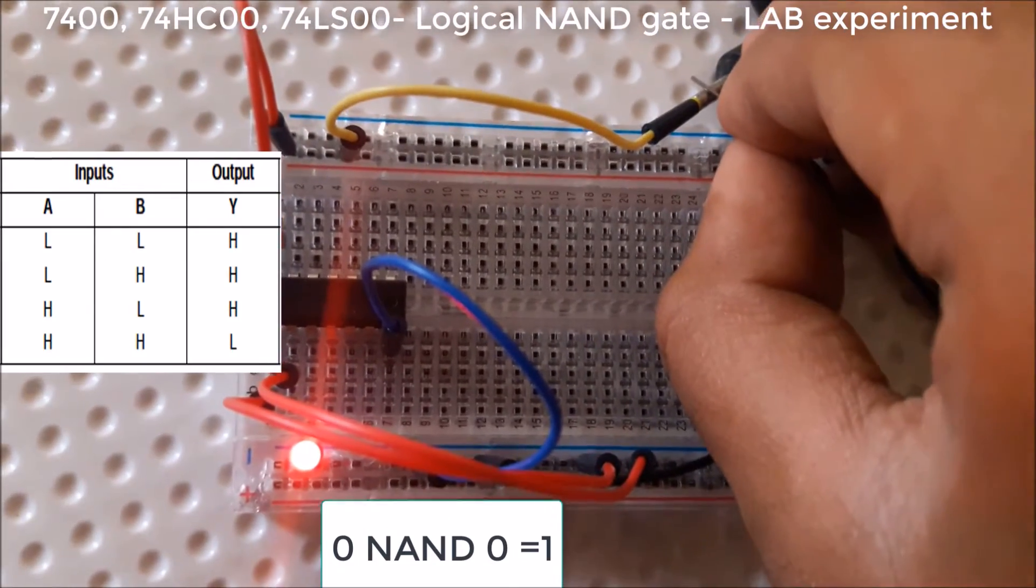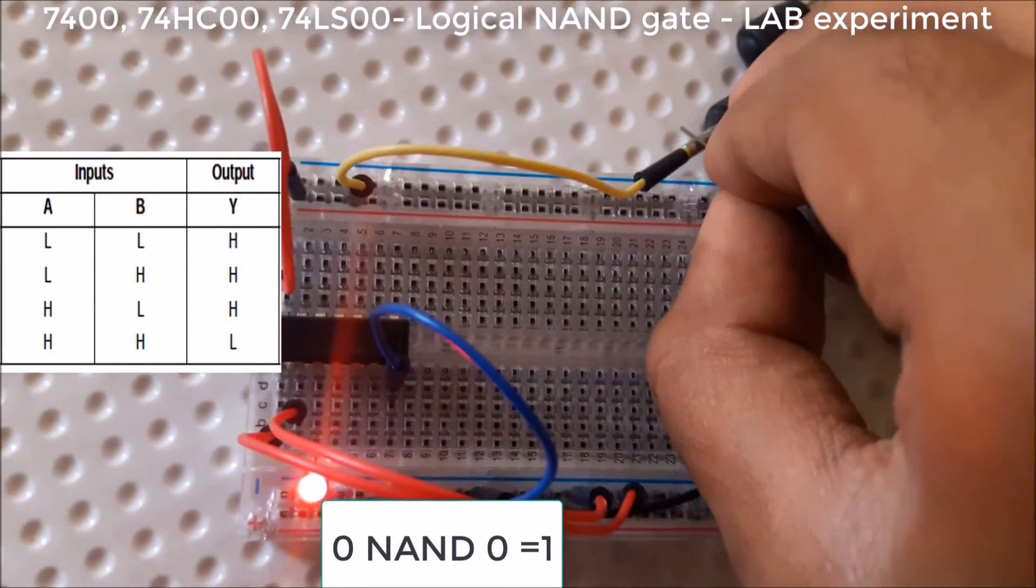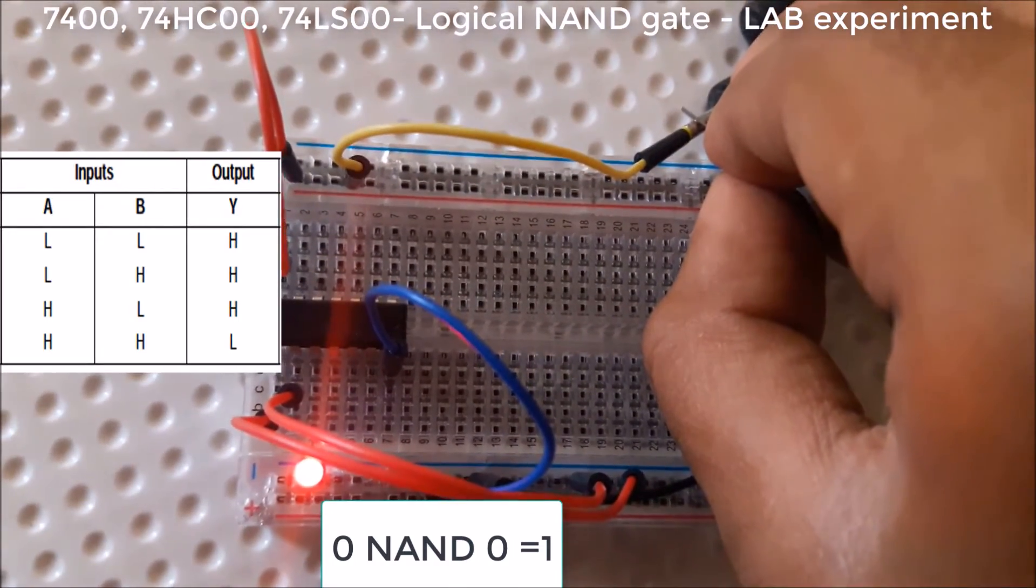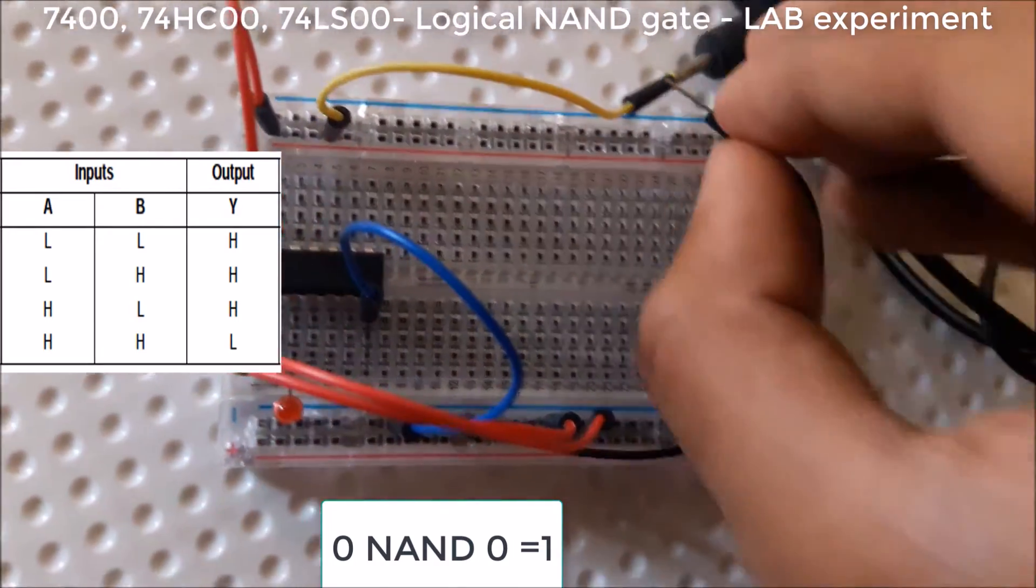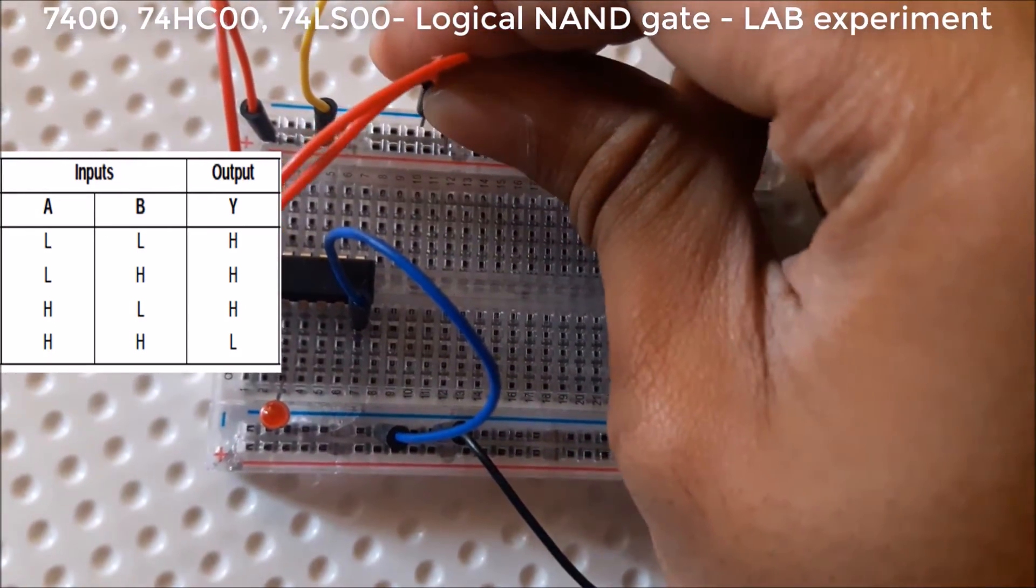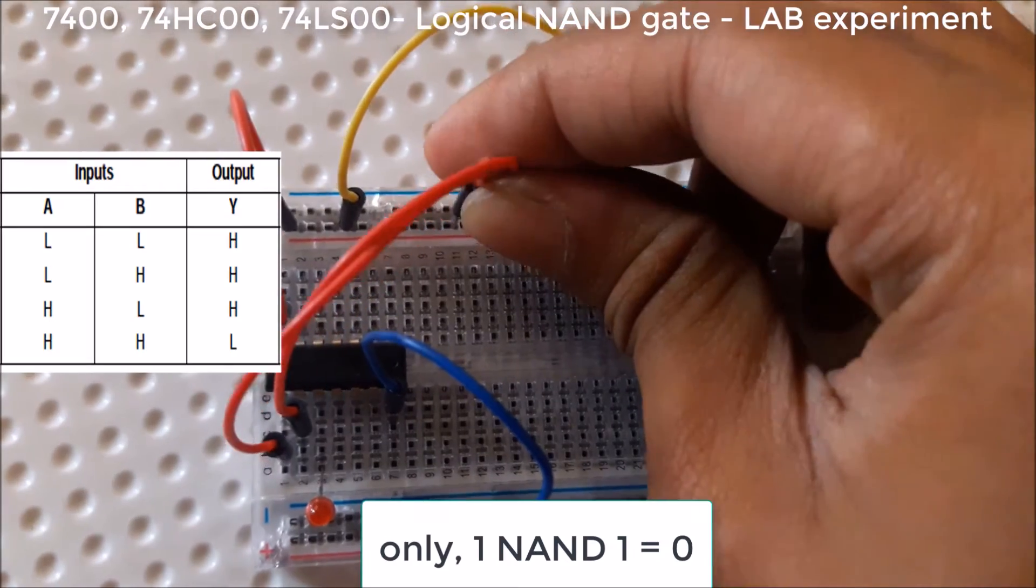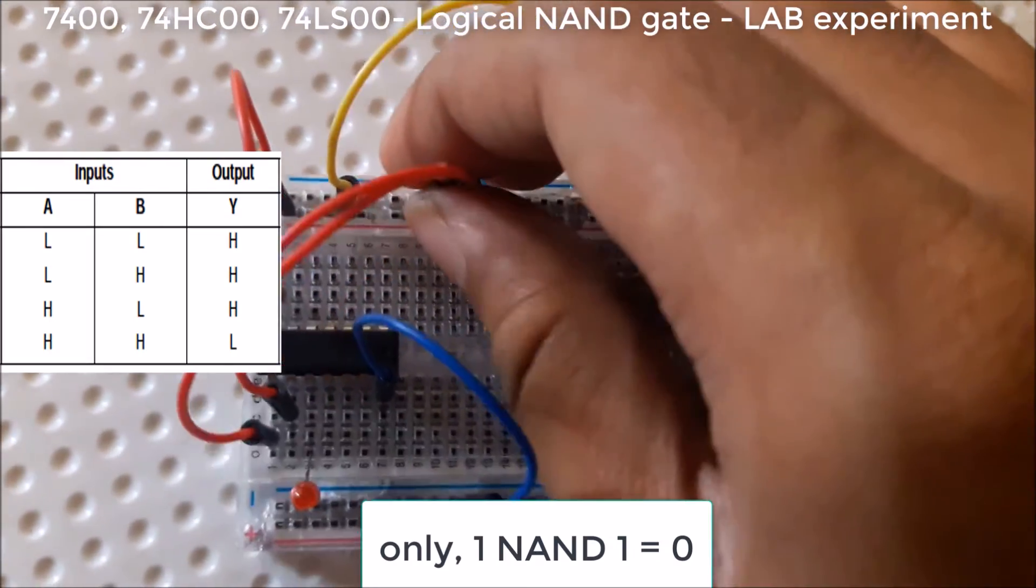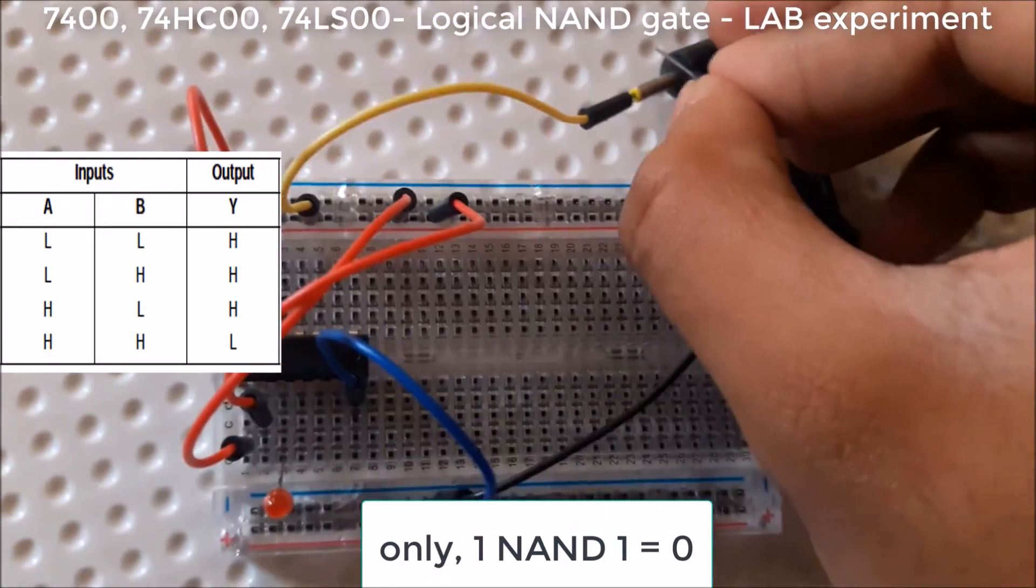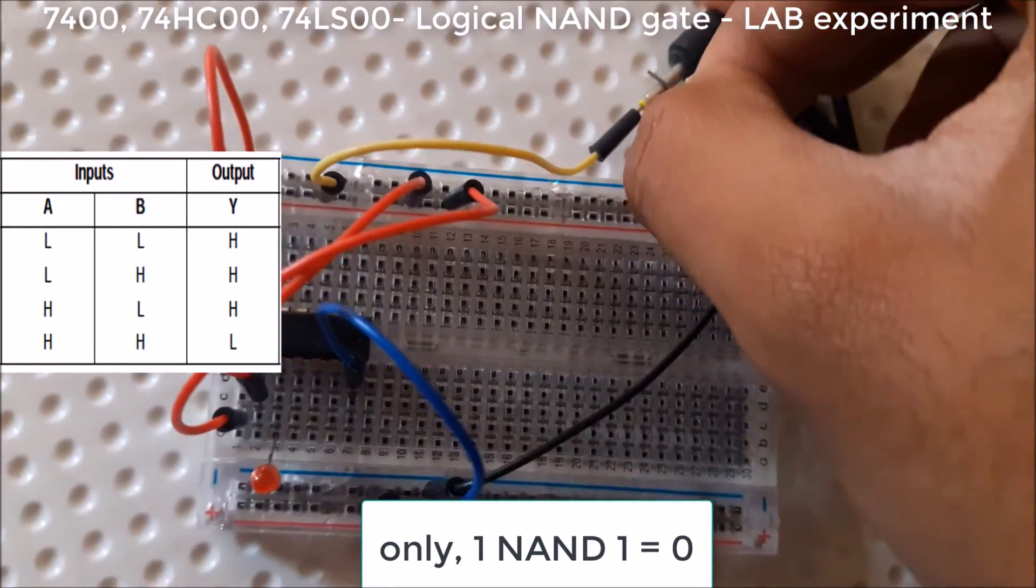0 and 1 is giving 1, and 1 and 0 is also giving 1. Only when we give 1 and 1 as input, then the output is 0.